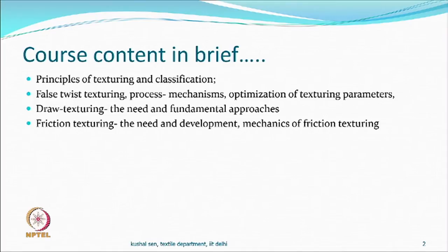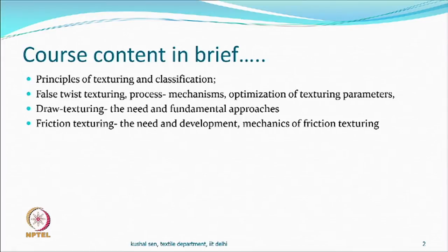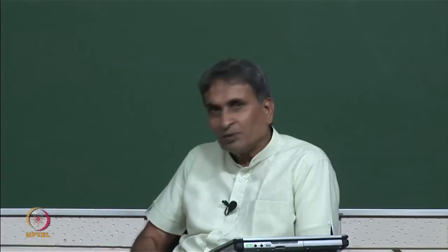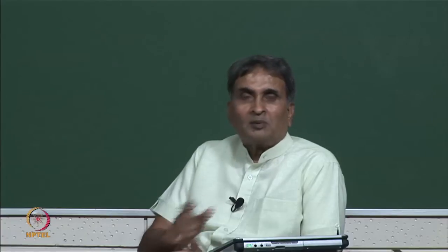The next is friction texturing, where friction is a very important component in the whole process for twisting purposes. You can twist by many methods, but this has become a popular technology. We will cover why friction texturing was needed, what developments have taken place, and the mechanics of friction texturing, along with property correlations.